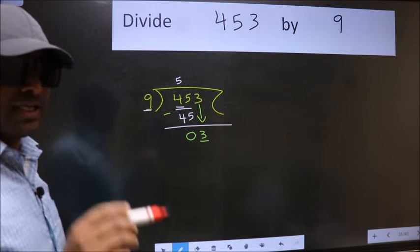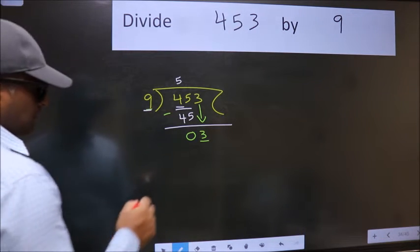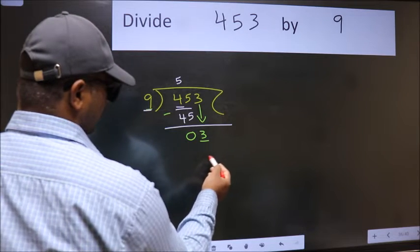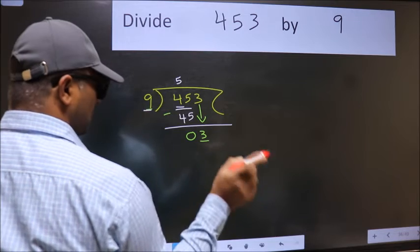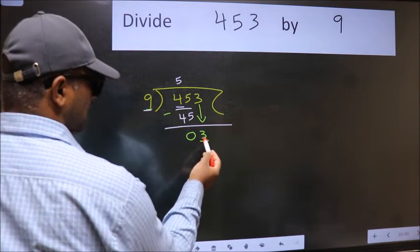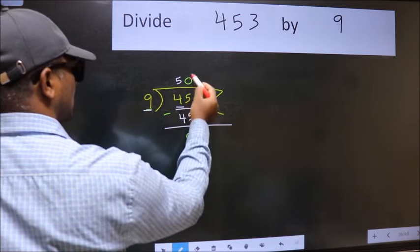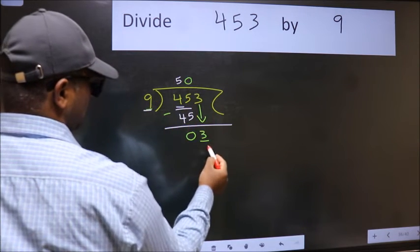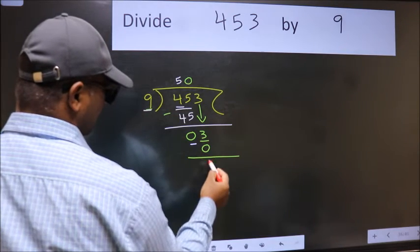Instead, we should think about which number to take here. If I take 1, we get 9, but 9 is larger than 3. So we take 0. 9 into 0 is 0. Now we subtract and get 3.